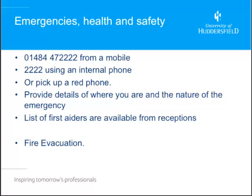First things first: emergency health and safety. The 222 number is the campus support line — that's an important number. They can get it from a mobile phone, use an internal phone, or pick up a red phone at reception. Point out to them where the fire exits are and the fire assembly point. Explain that if there is a fire evacuation they should follow you to the fire assembly point and wait for further instructions, but if they're on a break and not with you they should make their way straight to the fire evacuation point and try to find their group.